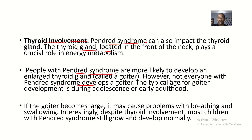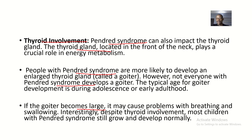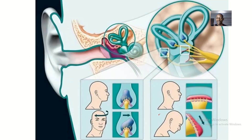The typical age for goiter development is during adolescence or early adulthood. If the goiter — the enlarged thyroid gland — becomes too large, it may cause problems with breathing and swallowing, because both the trachea and the esophagus pass behind the thyroid gland. Interestingly, despite thyroid involvement, most children with Pendred Syndrome still grow and develop normally.